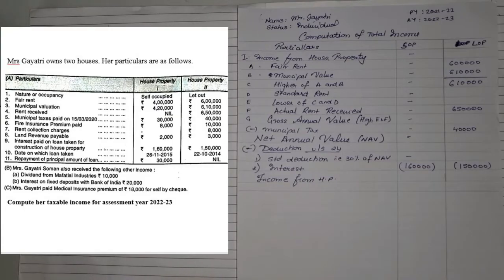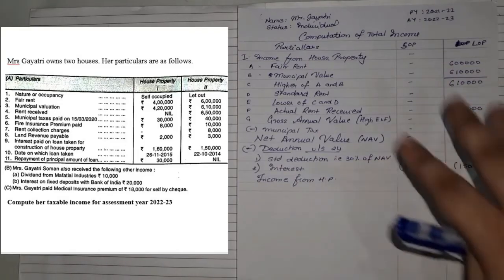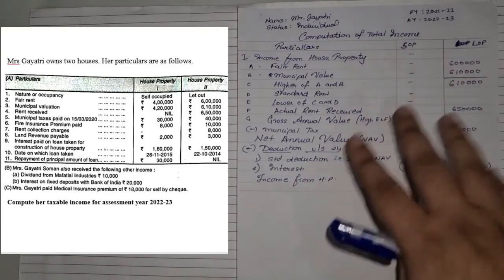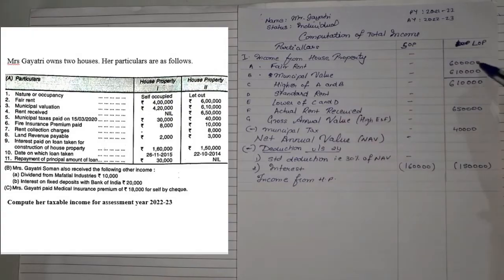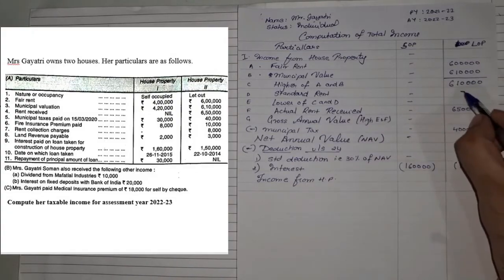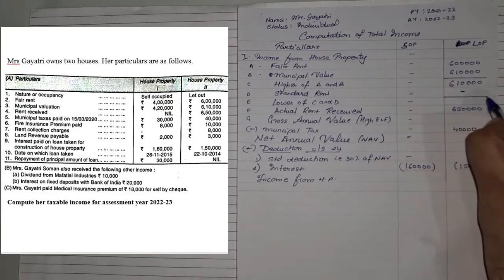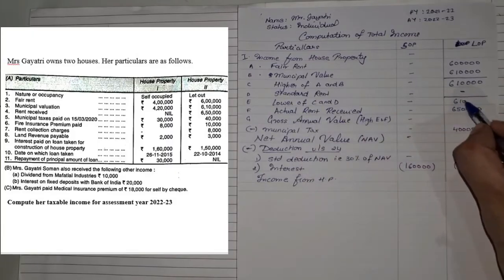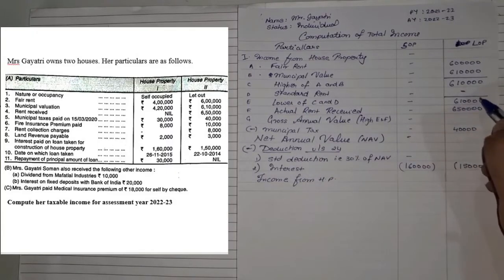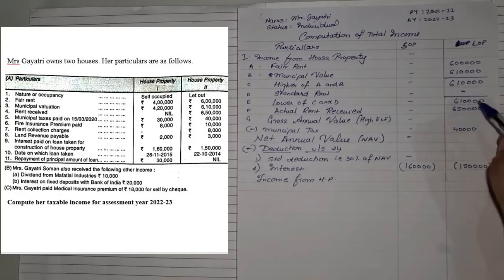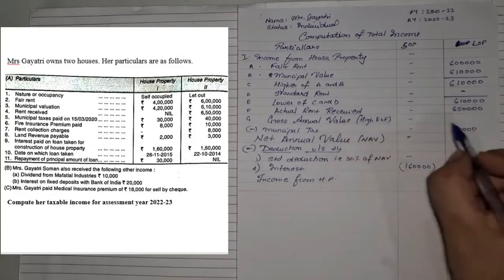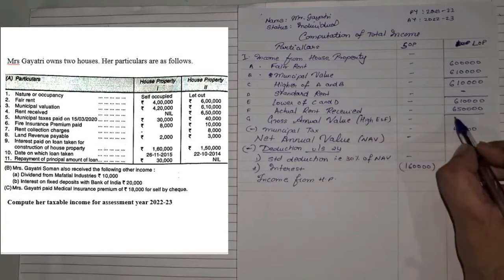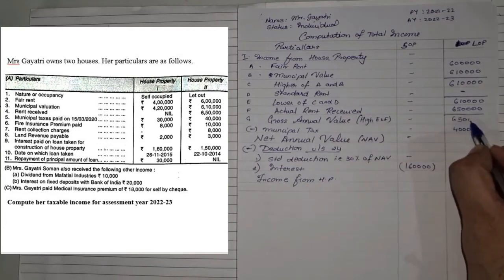They have also mentioned repayment of principal and some adjustments. The adjustments are nothing to do with the house property sum. Higher and lower we got; there's no standard rent. So we will get point E, that is lower of C and D, as 6 lakhs 10,000. Again, 6 lakhs 10 and 6 lakhs 50 — the higher of E and F — your gross annual value is 6 lakhs 50,000.